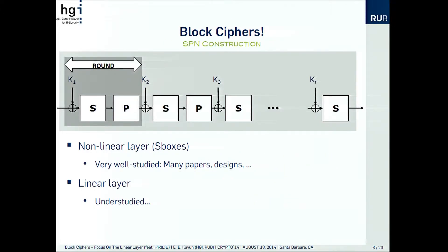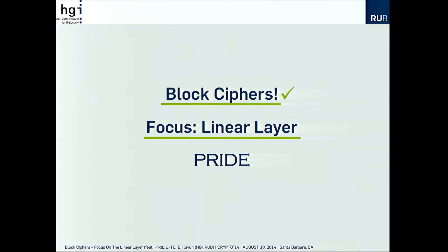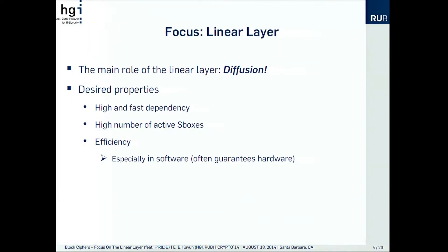If we focus more on SPNs, we can see that we have the S and P layers, which we call the nonlinear and linear layer. With this nonlinear layer, which is made up of S-boxes, we have studied it quite well so far — many papers, many general designs. But unfortunately the linear layer is a bit understudied, so that's why we focus on the linear layer. Diffusion is the main role of the linear layer, and its desired properties are to have high and fast dependency, a high number of active S-boxes, and of course efficiency for implementations.